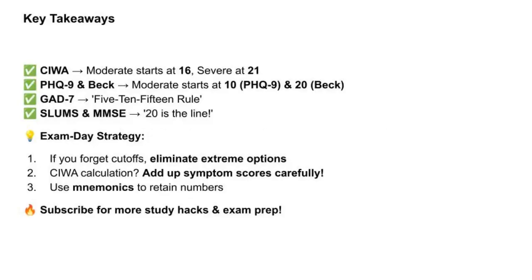Key takeaways: CIWA — moderate starts at 16, severe at 21. PHQ-9 and BDI — moderate starts at 10 for PHQ-9 and 20 for BDI. For GAD-7, remember the 5-10-15 rule. For SLUMS and MMSE, remember 20 is the line — below 20, dementia is likely. For MMSE, severe scores are single digits. Exam day strategy: if you forget cutoffs, eliminate extreme options. Calculate carefully, and use mnemonics to retain numbers.